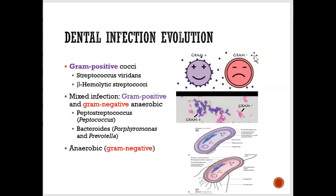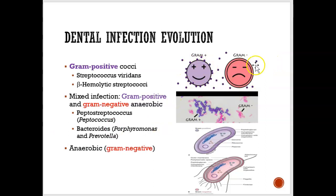Gram positive bacteria are aerobic, which means they need oxygen to survive. Gram negative are considered anaerobic, which means they don't need oxygen to survive. Most dental infections are mixed — so we have a mixture of gram positive and gram negative. And most dental infections are that.